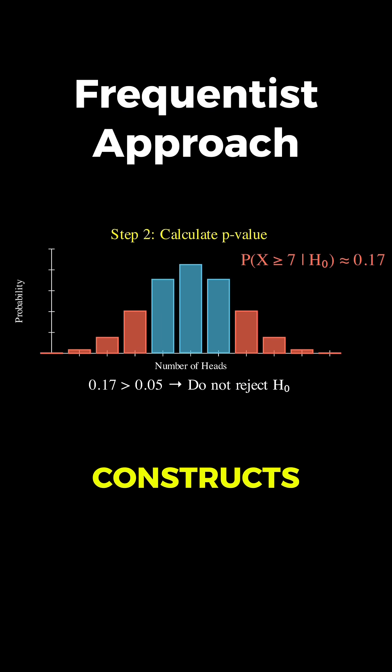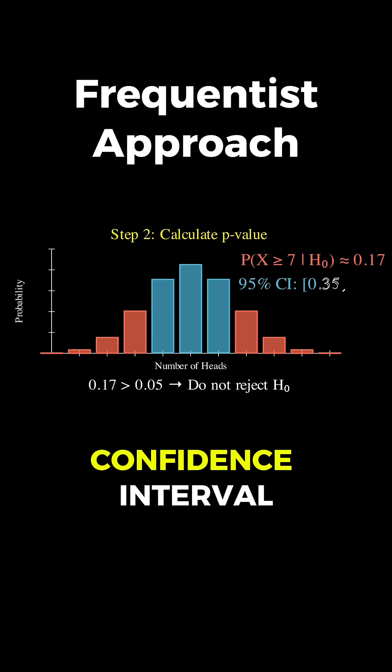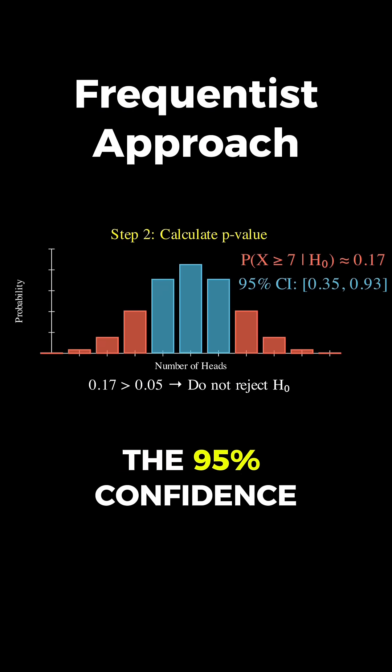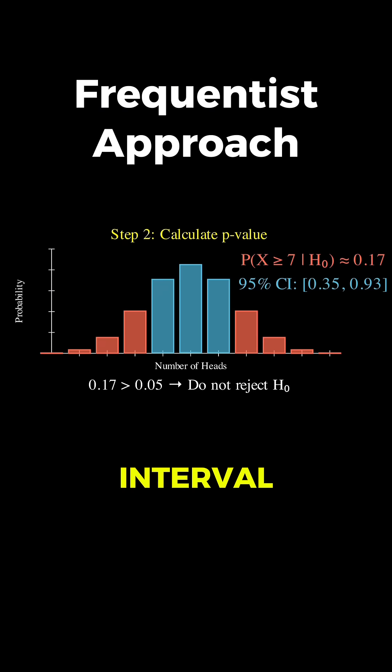The frequentist also constructs what's called a confidence interval. After doing the mathematics, he determines that the 95% confidence interval runs from about 0.35 to 0.93.